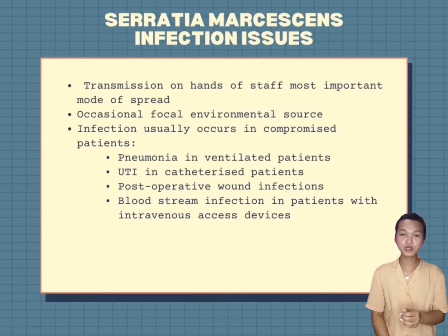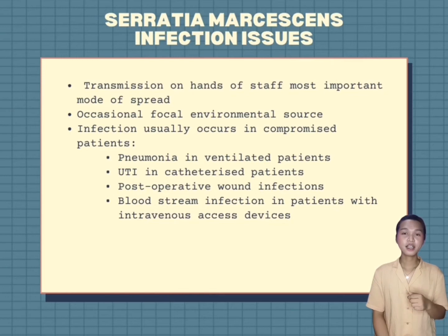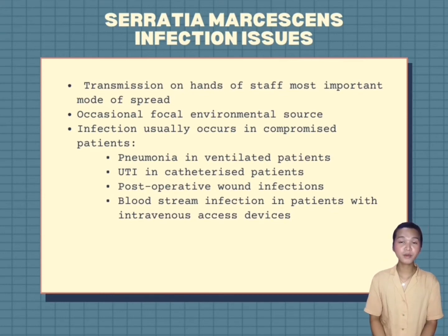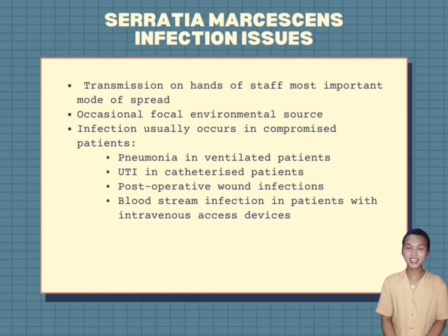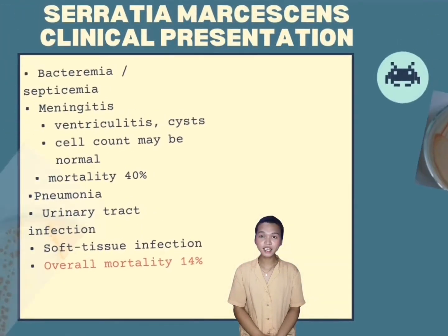These are the possible modes of transmission for this specific bacteria. The most important mode of spread is transmission on the hands of staff. The second is occasional focal environmental sources. The third is infection usually occurs in compromised patients: UTI in catheterized patients, post-operative wound infections, and bloodstream infection in patients with intravenous access devices.